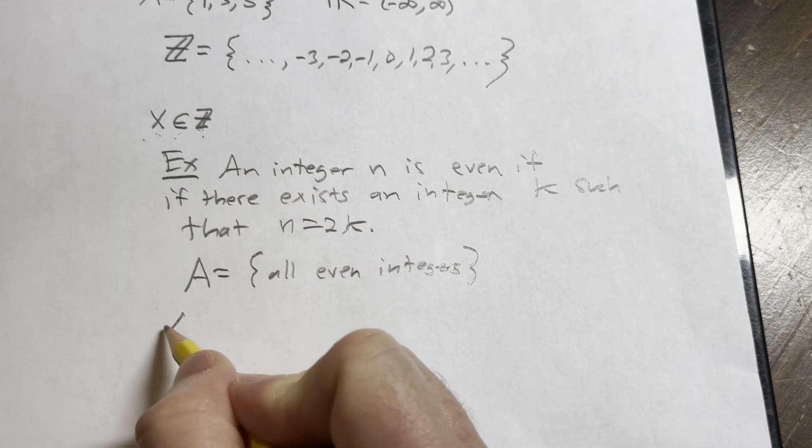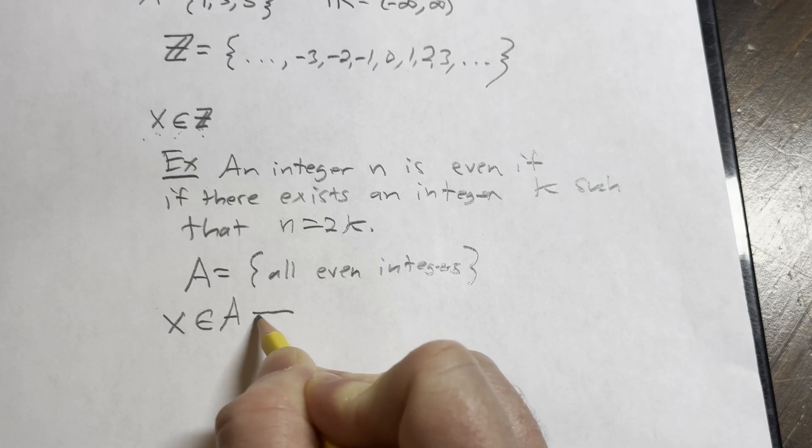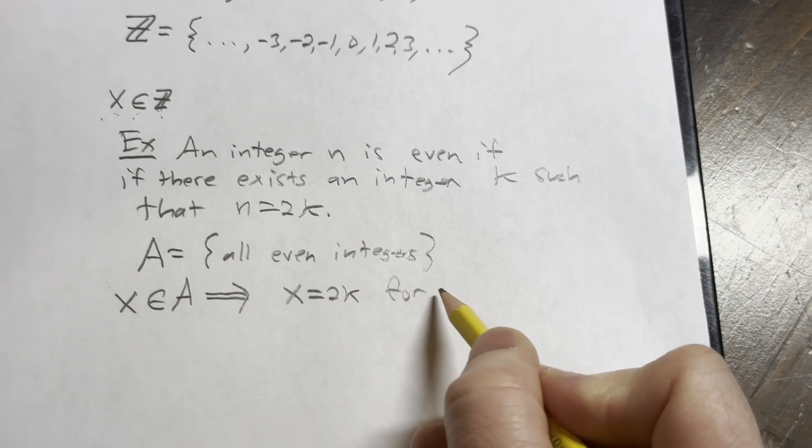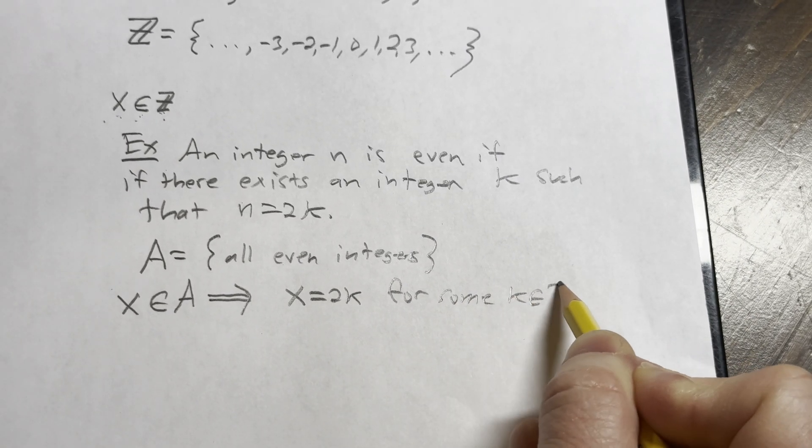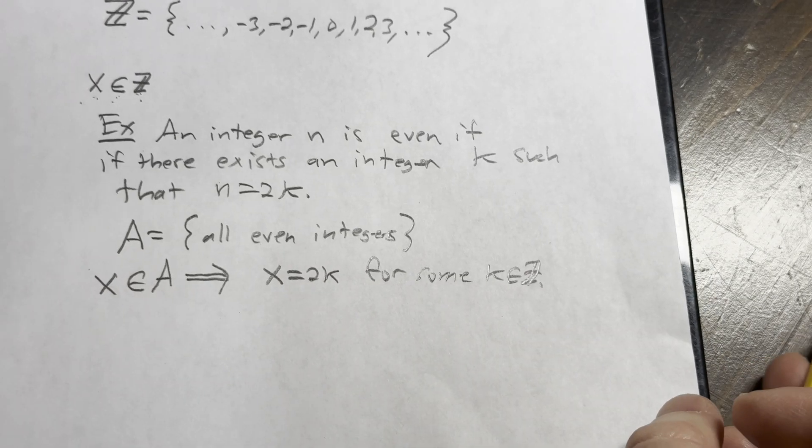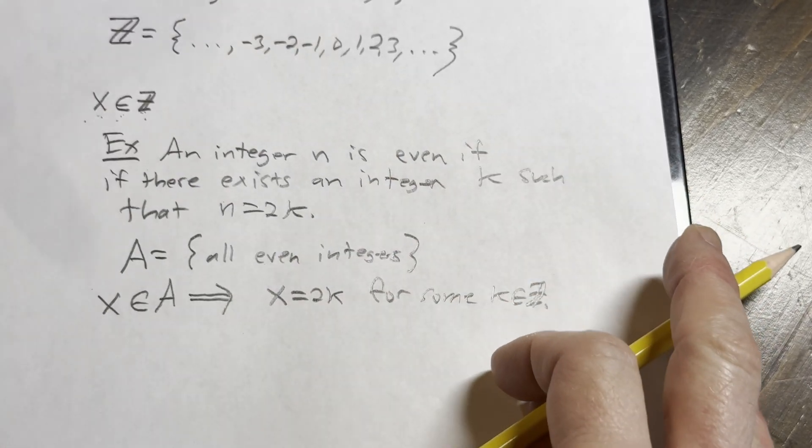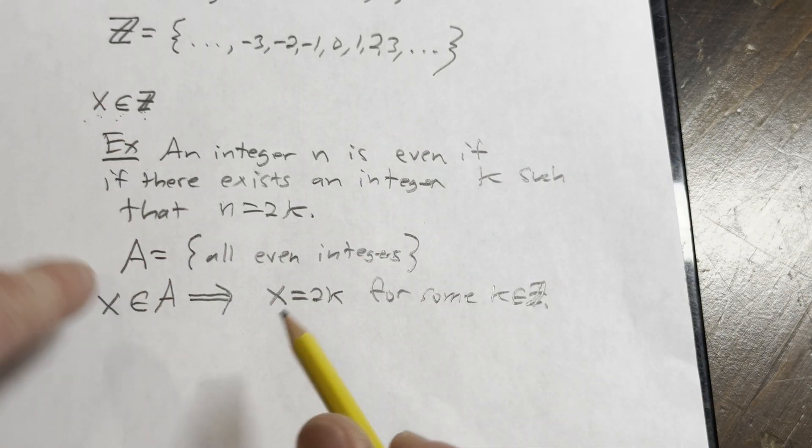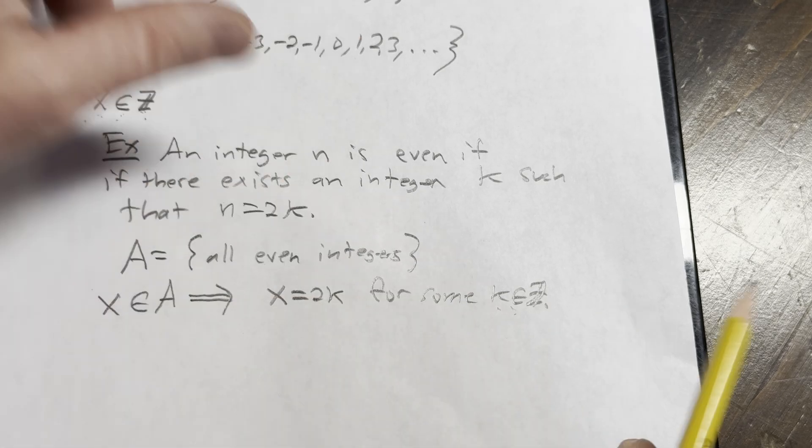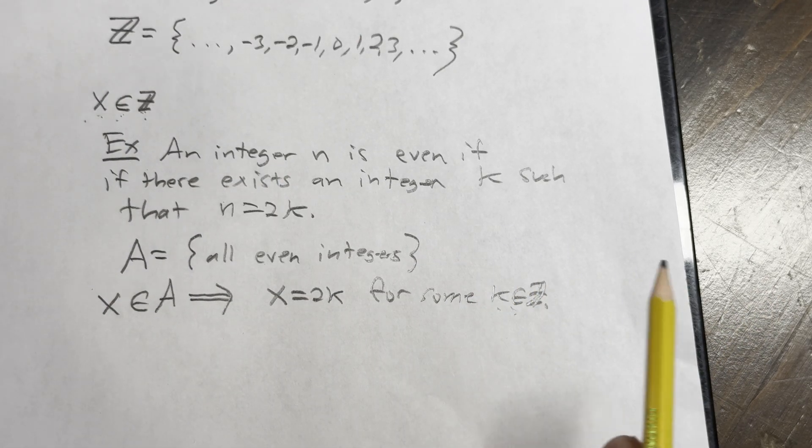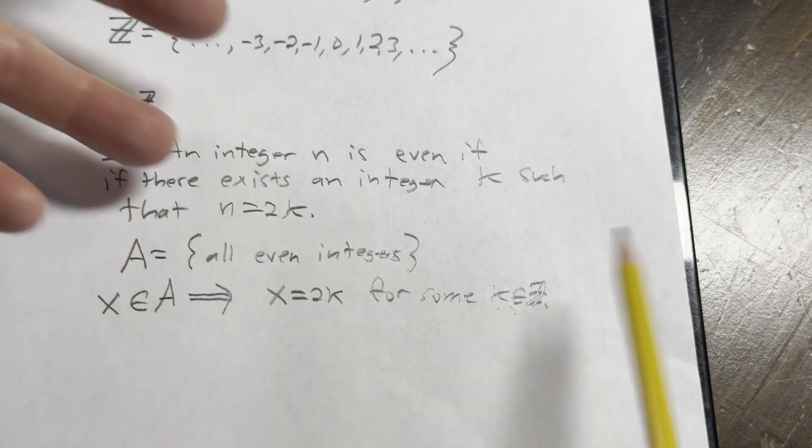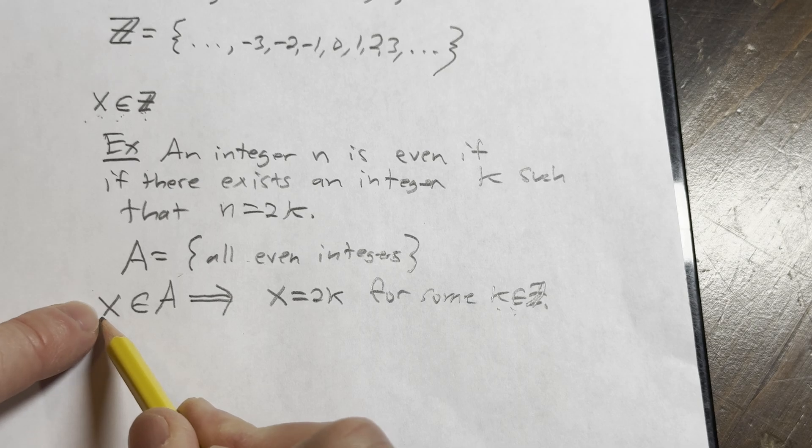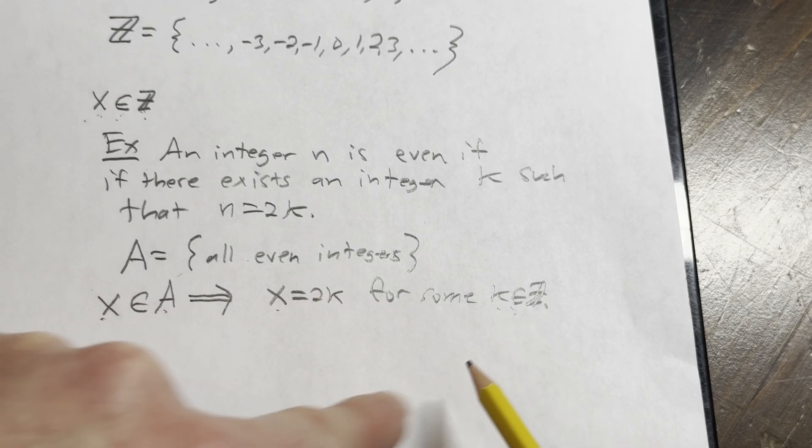that we say A is the set of all even integers. So if we take an element x in A, what does that imply? That implies that x is equal to 2k for some k in Z, right? So getting used to this kind of thing, understanding this, is basically what I wanted to show you in this video. Just, you know, this, what this means, this symbol, when you see it used in proofs. And this is an example of how to use a definition, what a set is. So here A is the set of all even integers. So if we were to take an element x in A, that would mean that x is equal to 2k for some k in Z.